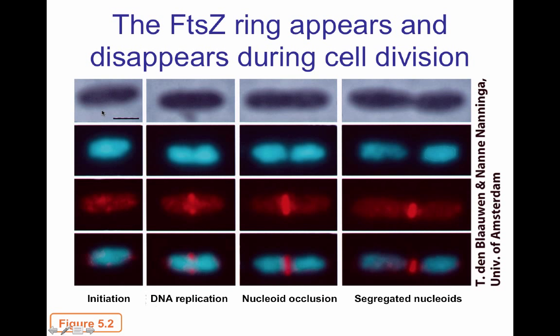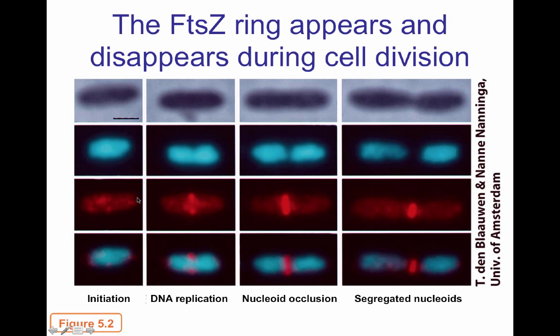During initiation of cell division, the nucleoid is in the middle of the bacillus and FTSZ is distributed along the entire cytoplasmic area. As DNA replication begins, an area forms in the middle where the chromosome starts to separate — that same position is where FTSZ polymerization begins. When the chromosome is completely divided, the FTSZ ring forms right in the middle. As the cell continues to elongate, the FTSZ ring contracts by GTP hydrolysis, eventually forming a septum that divides the cell into two.